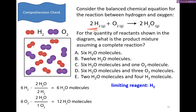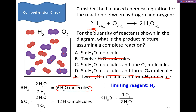Since hydrogen is our limiting reagent, we know it runs out and there are no hydrogen molecules left over. We also know that we can't produce 12 water molecules. So what is actually produced? We produce six water molecules. To find out how much oxygen is left over: we know we produce six water molecules, and for every two water molecules we use one oxygen — so we use three oxygen molecules, which means three oxygen molecules are left over. The answer is choice D.